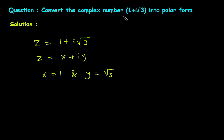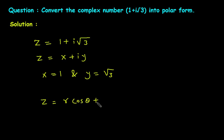Now we have to convert it into its equivalent polar form. The equivalent polar form will be z is equal to r cos theta plus i r sin theta. So we have to find the value of r and theta.